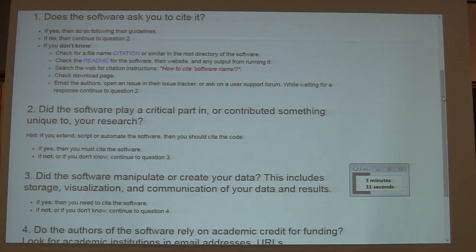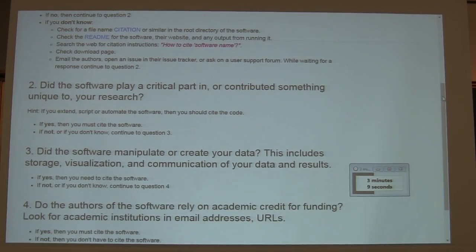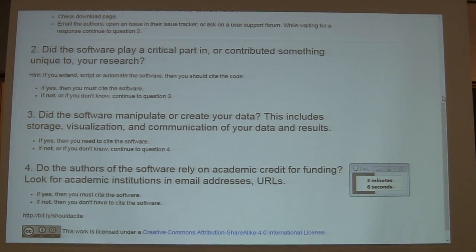But if it doesn't, you then have to decide if the software plays a critical part in your research and if other people need to know which software you used in order to reproduce your results. The same applies to data — if you've manipulated your data in specific software, you should give details of that. And even if you've only created a simple figure, you should think about whether the authors of the software depend on that kind of credit for funding — because if they do, you can just as well cite them and help them out. You still used their tools and they still put their work into it, so why not?